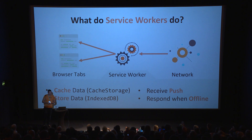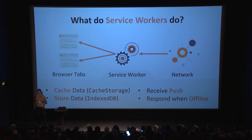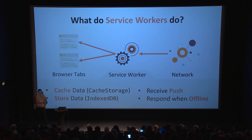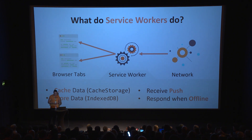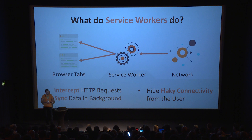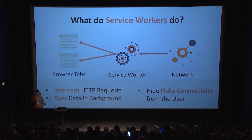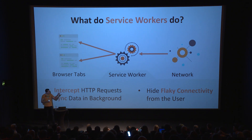What can you do with a service worker? You can cache data — when you see a request and know it'll be asked again, for example for your app shell, you can cache that request. You can store structured data in IndexedDB, which you have access to in your service worker. You can receive push notifications, respond when the user is offline, intercept HTTP requests — for example, mock the browser to handle an image format it doesn't natively understand. You can sync data in the background like in the email example. And you can even hide Li-Fi — when you think you have Wi-Fi but it's actually unreliable.